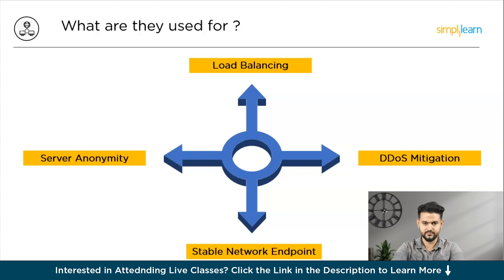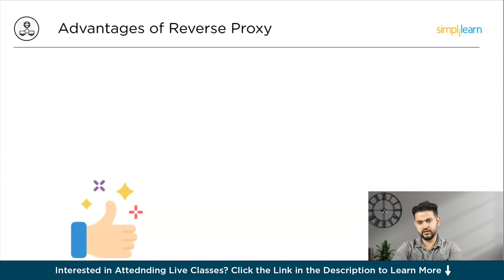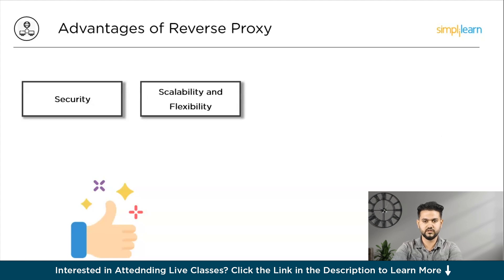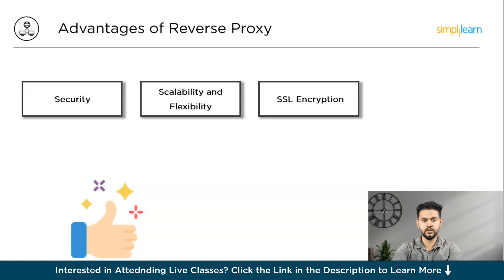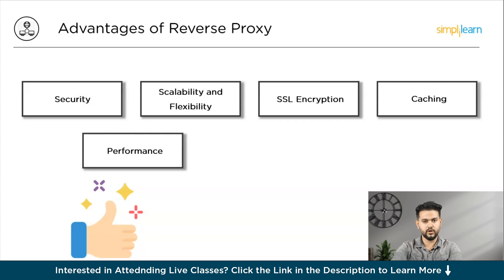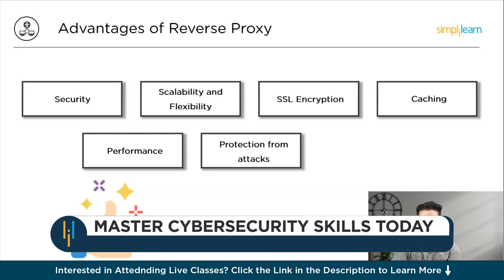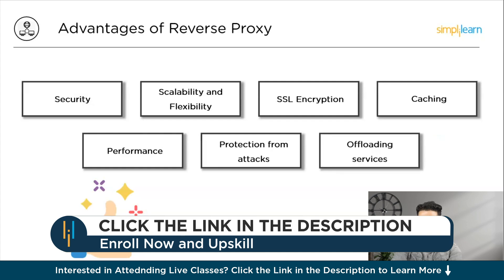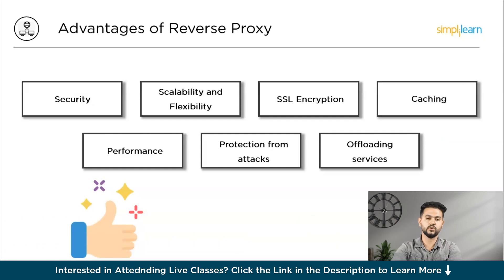The advantages of reverse proxy include: security — safeguarding backend servers from direct exposure; scalability and flexibility — allowing seamless addition and removal of servers based on traffic volume; SSL encryption — fostering secure communication between users and backend servers; caching — enabling more efficient processing of future requests; and performance, reliability, and security improvements overall. It also provides protection from attacks by preventing websites or services from revealing their IP addresses, and it can offload services from applications, thereby improving overall performance.